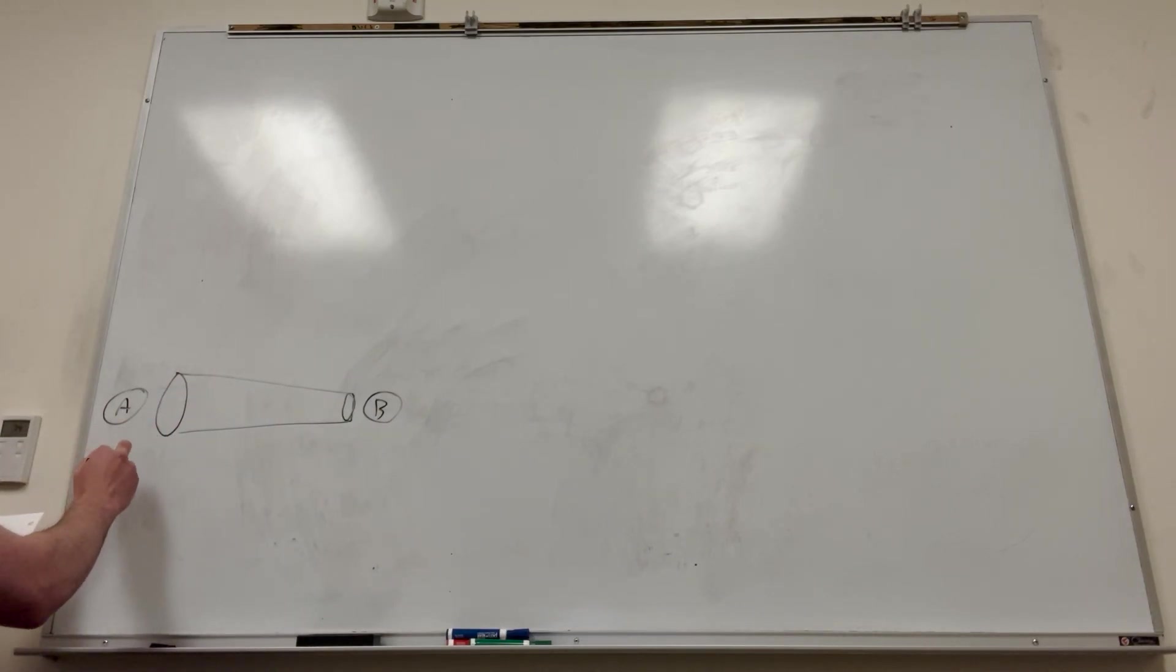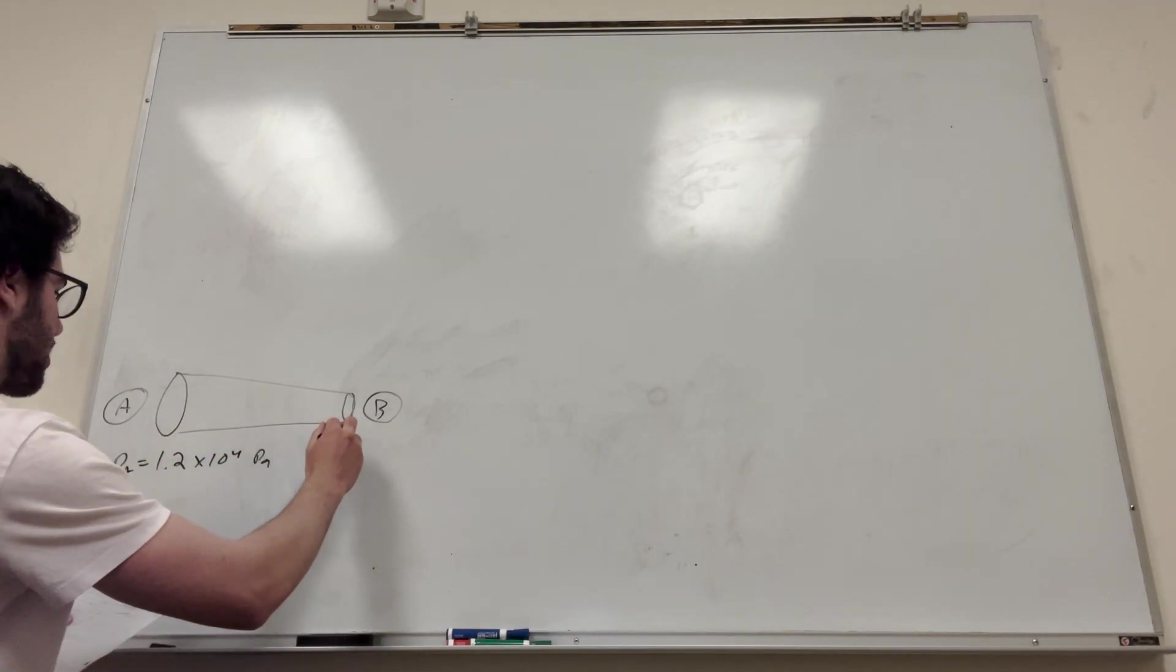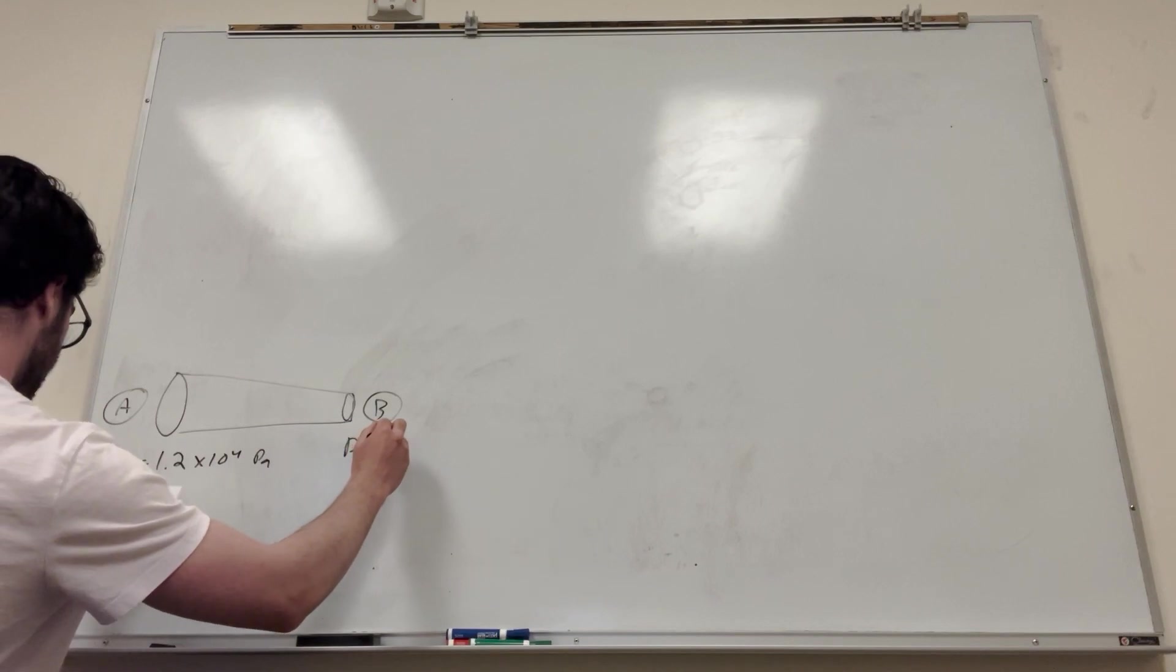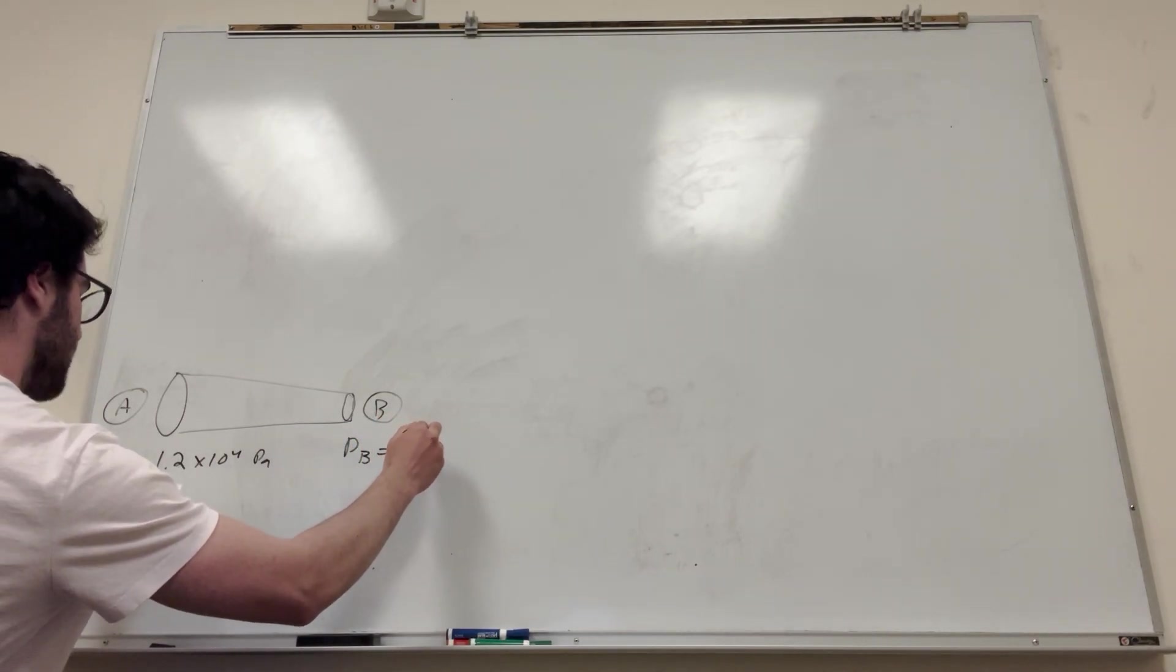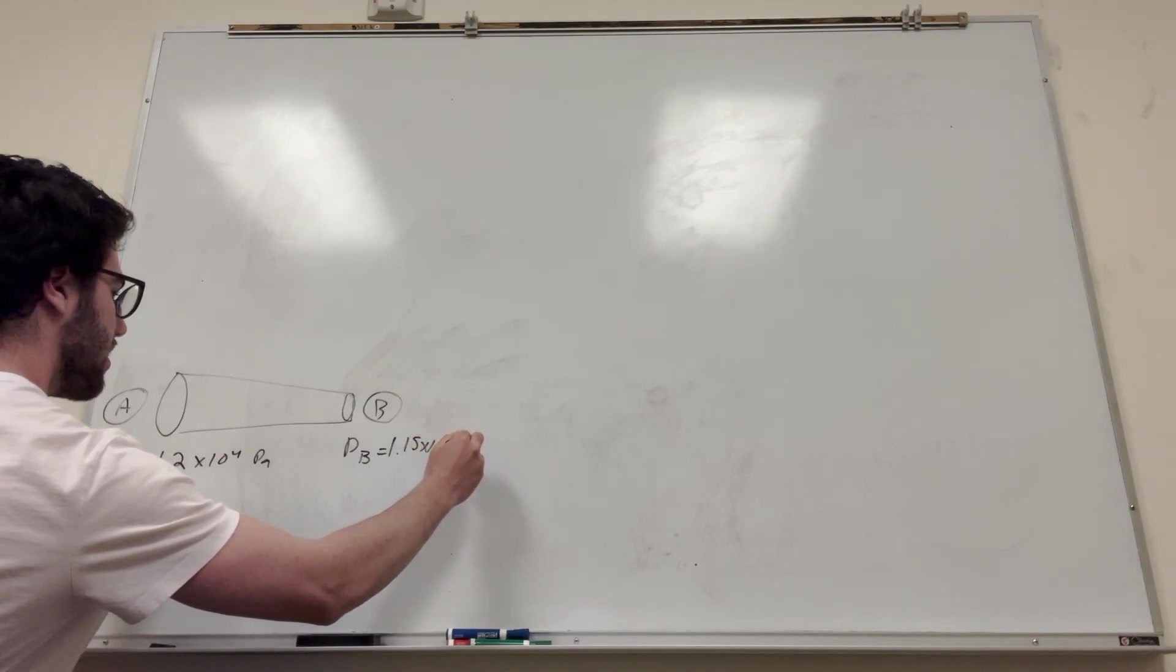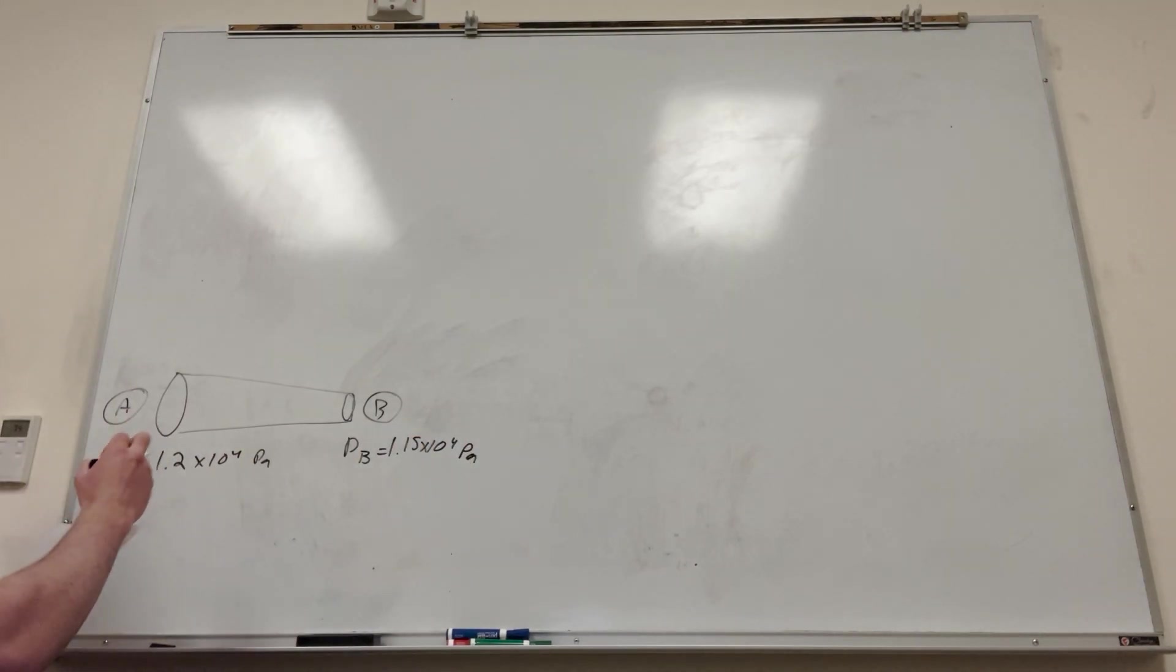So pressure at A is equal to 1.2 times 10 to the 4 Pascals, that's given. And pressure at B is equal to 1.15 times 10 to the 4 Pascals. So there's actually a little bit less pressure over there. And it gives us the velocity here. So velocity at A is equal to 0.3 meters a second.